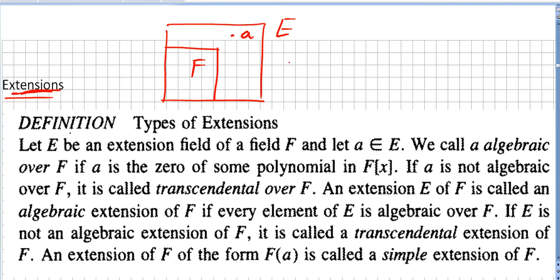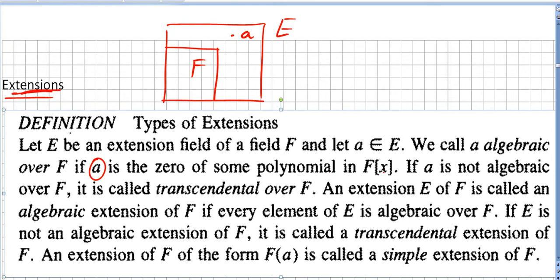And a is an element in E. We call a algebraic over F if a is the zero of some polynomial in F[x]. So if f(x) is in F[x] and f(a) equals zero, then a is the zero of some polynomial and we call a algebraic over F.